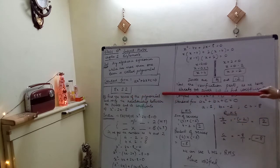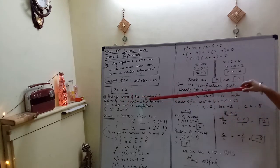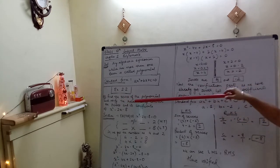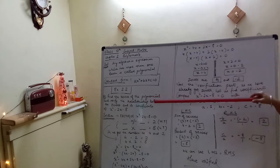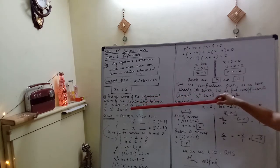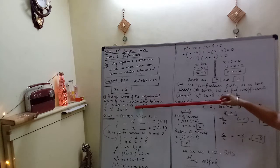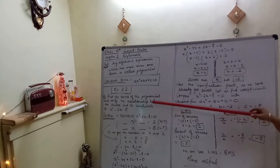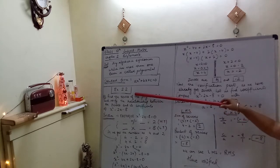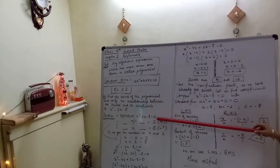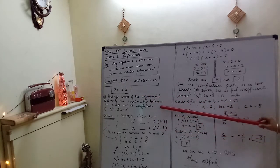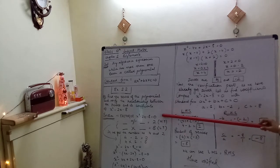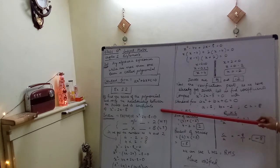The first question says find the zeros of the polynomial and verify the relationship between the zeros and its coefficients. Your polynomial is x square minus 2x minus 8. Now the very first step to solve this question and to find out the zeros is to factorize it. Factorize we have learned by splitting the middle term.